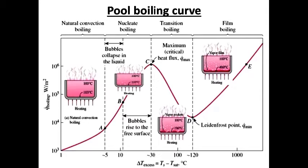The first bubbles start forming at point A of the boiling curve at various preferential sites on the heating surface. The bubbles form at an increasing rate at an increasing number of nucleation sites as we move along the boiling curve toward point C. The nucleate boiling regime can be separated into two distinct regions. In region A to B, isolated bubbles are formed at various preferential nucleation sites on the heated surface, but these bubbles are dissipated in the liquid shortly after they separate from the surface.